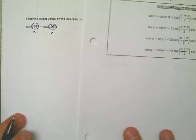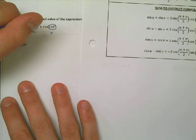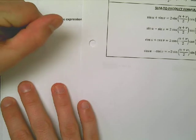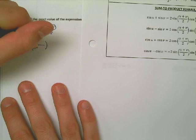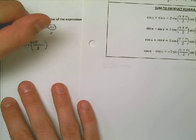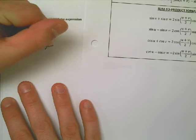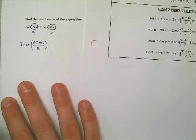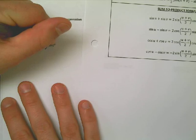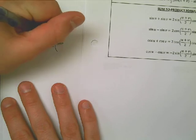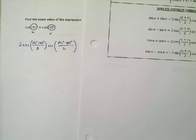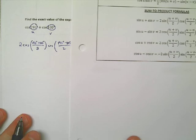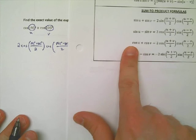That means that I can rewrite this as 2 times the cosine of u plus v all over 2, which is 195 plus 105, times the cosine of u minus v, which is 195 minus 105 all over 2. This is all coming from the third formula on our notes. I just plug in u and v.